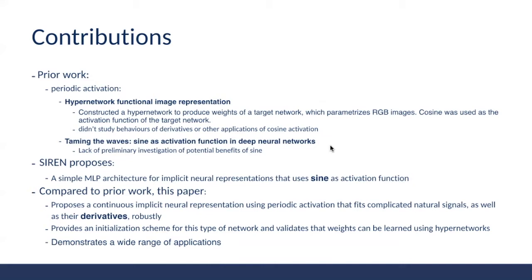None of the prior works have demonstrated a wide range of applications of sine activation. In the first related work, a hyper network was constructed to produce weights of a target network that uses cosine as the activation function. Even though the authors claim cosine activation contributed to performance compared to ReLU, they didn't study the behaviors of derivatives or other applications. In the second work, a rejected ICLR submission, sine activation was studied but only validated on the simple MNIST dataset, lacking preliminary investigation of potential benefits.